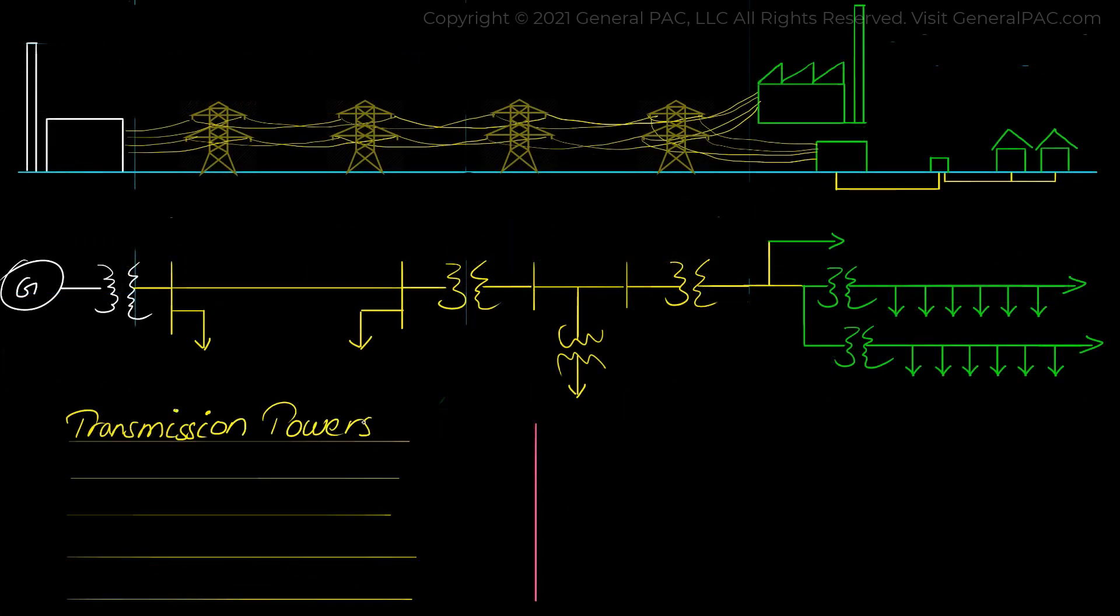Now transmission towers are the most visible component of power transmission systems. High voltage lines require separation from each other and their surroundings. Transmission towers perform their function by providing structural strength and insulation, damping line oscillations,